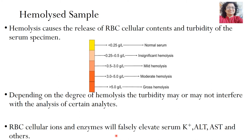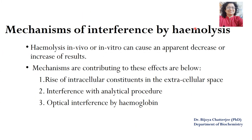RBC cellular ions and enzymes will also increase and this will falsely elevate certain parameters such as potassium and enzymes like ALT, AST and others. The mechanism of interference by hemolysis — whether it occurs in vivo or in vitro — can cause certain results to decrease or increase. The mechanisms contributing to these effects are: rise in intracellular constituents in the extracellular space or plasma, interference with analytical procedures, and optical interference by hemoglobin.